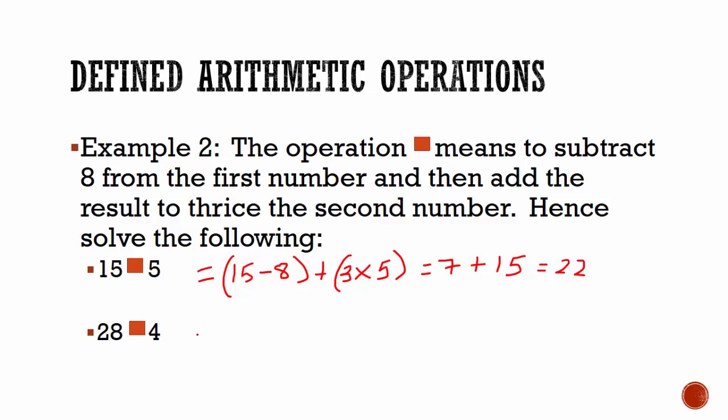Second one, 28 rectangle 4 is equal to 28 minus 8 added to 3 times the second number, 3 multiplied by 4. That gives 28 minus 8 is equal to 20, and 3 multiplied by 4 is 12. 20 plus 12 is equal to 32.